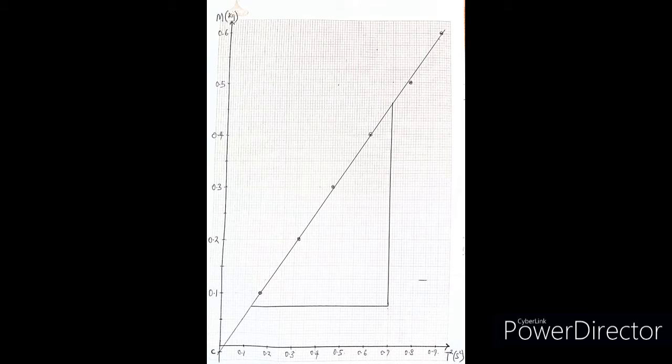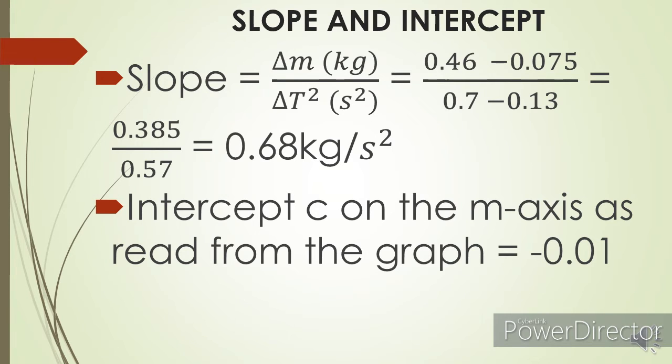So I took note of my intercept on the vertical axis, which is -0.01. It's recorded, and then I also calculated the slope. So to deduce the slope, this is what my slope is like. The slope and the intercept both could be calculated by finding the change in m and change in T², and then from the graph found the upper and lower limits of both axes, and then calculated it to be 0.68 kg per second squared.